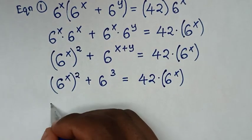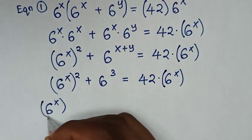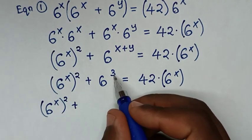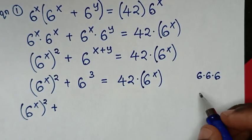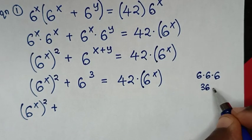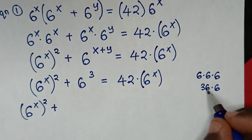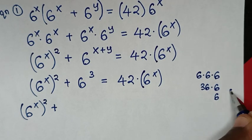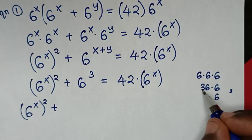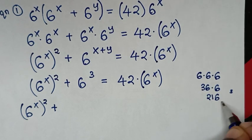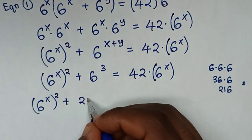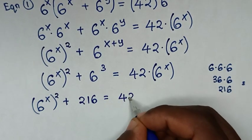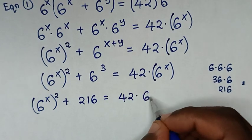Now 6 power 3 is the same as 6 times 6 times 6. 6 times 6 is 36, and 36 times 6 is 216. So 6 power x squared plus 216 is equal to 42 times 6 power x.